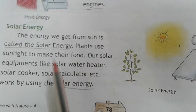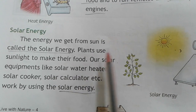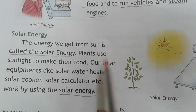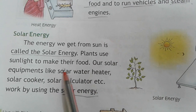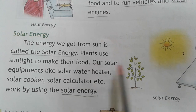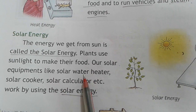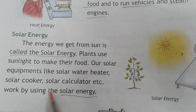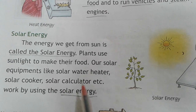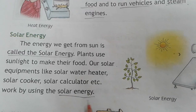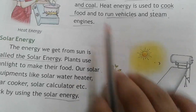Solar energy: the energy we get from the sun is called solar energy. Plants use sunlight to make their food. Solar equipment like solar water heaters, solar cookers, and solar calculators work by using solar energy.